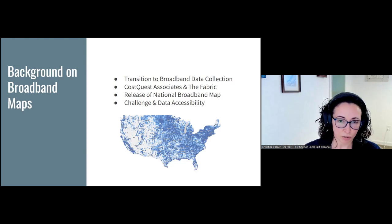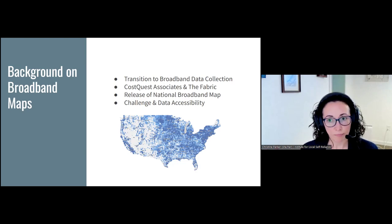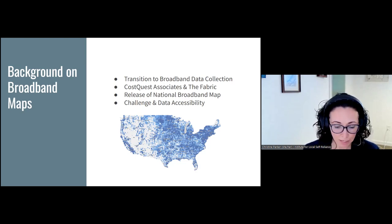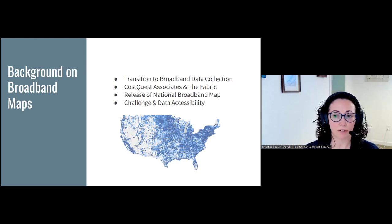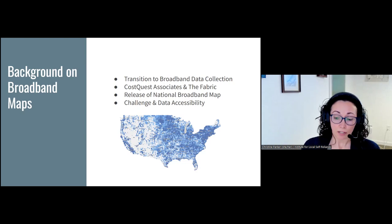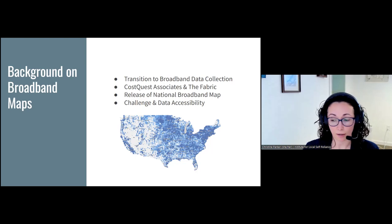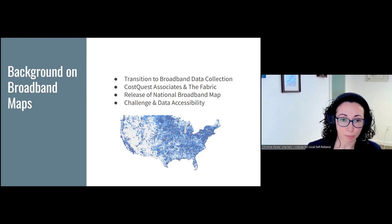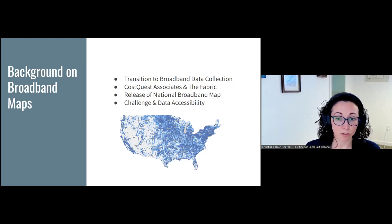In addition to location-level reporting, the new map also enables anyone — me at my house in Maine, folks in Texas, any kind of entity — to challenge data that is in this new map. With the old map, if you had a problem with it, there wasn't much you could do. But now you can look at your location, see if the address information is correct, see if what the ISP is claiming to provide is correct. If it's not, you can submit a challenge to get that corrected.